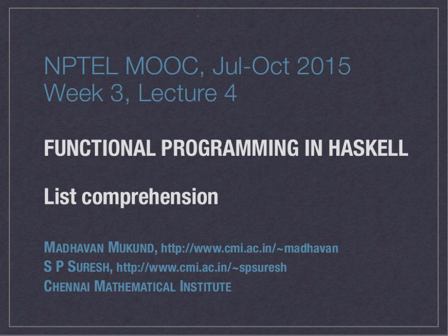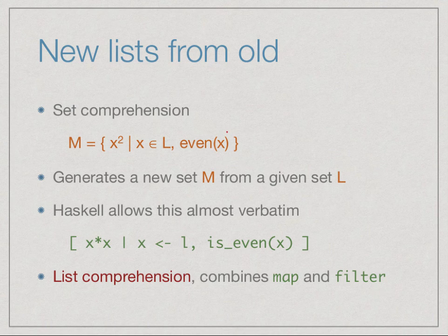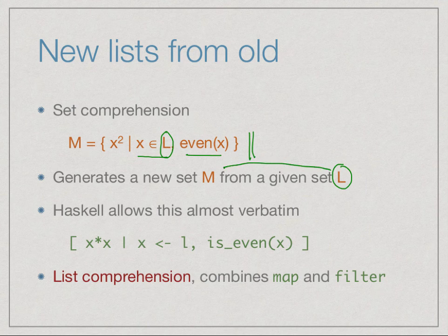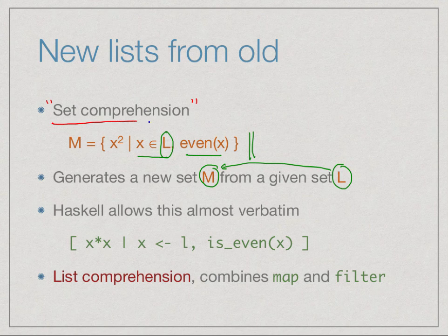Today we will look at a nice notation for doing this which is much more readable than just writing map and filter. We start with basic set-theoretic notation. We have often seen this kind of notation to describe a set: take a given set L, take all elements from L which satisfy some condition — in this case they are even — and square these elements. This is called set comprehension in set theory.